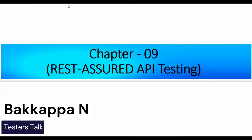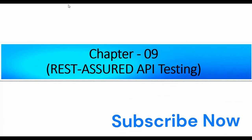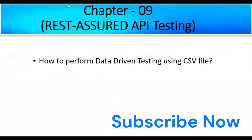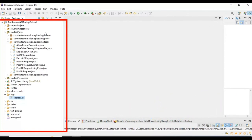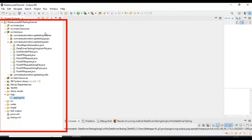Hi friends, this is Bakappa. Welcome back to Tester's Talk channel. In the previous REST Assured API testing tutorial, I discussed data-driven testing using JSON file. In this Chapter 9, I will discuss how to perform data-driven testing using a CSV file in REST Assured API testing. Let's look at the scenario first, then we will create the test data and implement the logic.